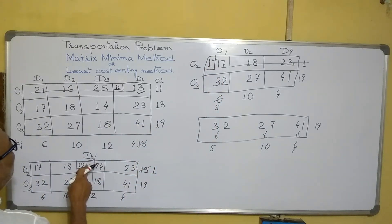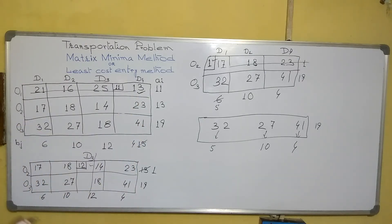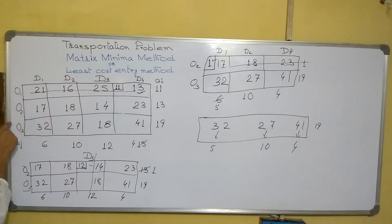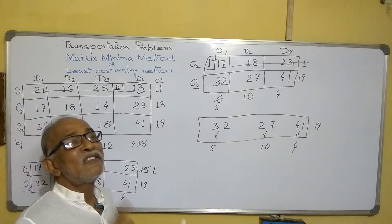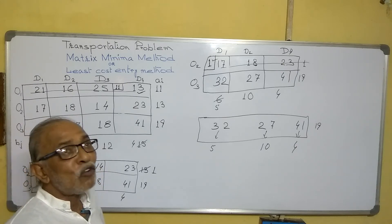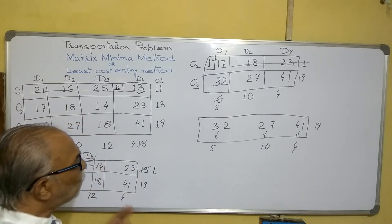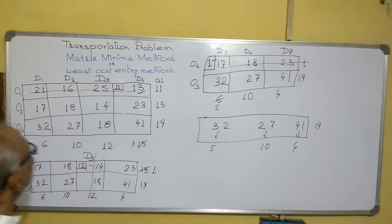So altogether in the beginning, count it is 1, 2, 3, 4, 5, 6, 7. M plus N is 7, and 7 minus 1 is 6. That is the maximum possible or allowable thing. So hence it is the feasible solution. This is called a basic feasible solution.